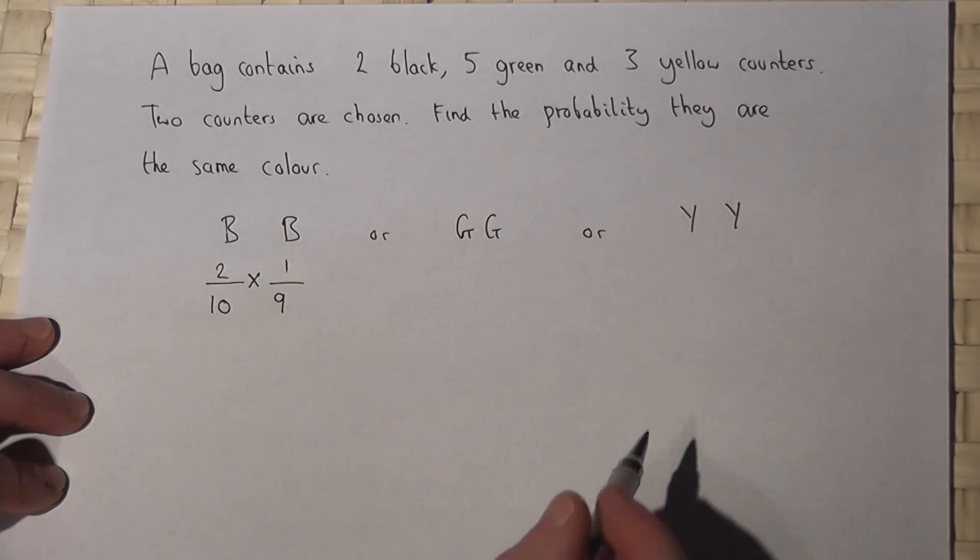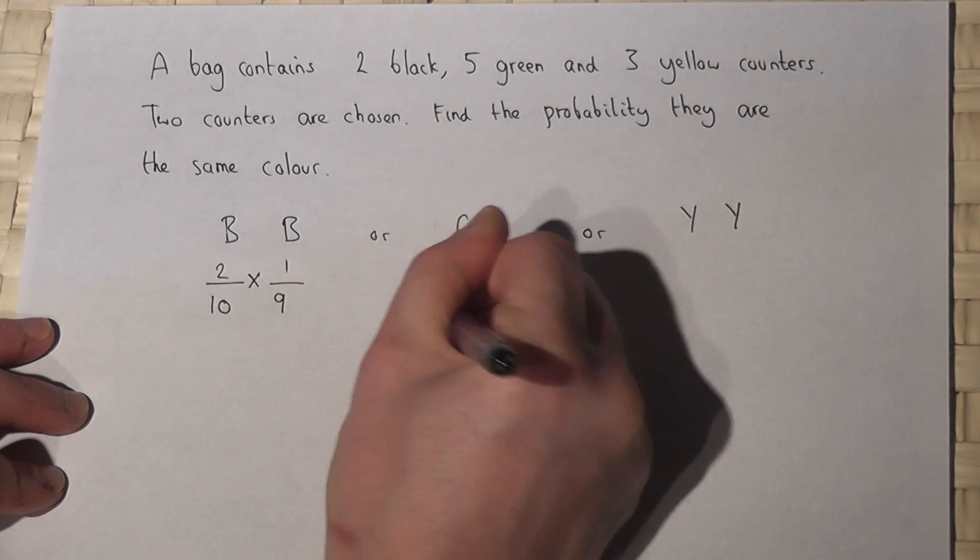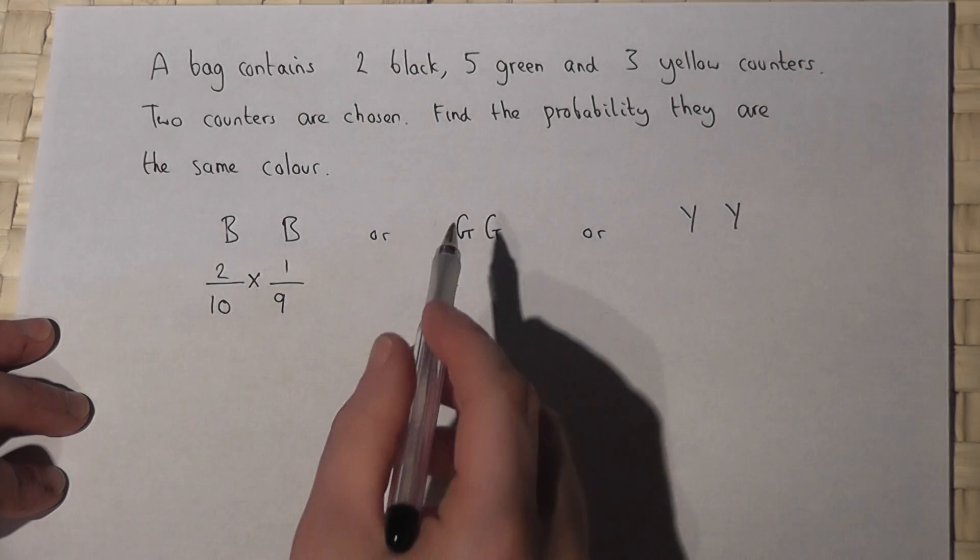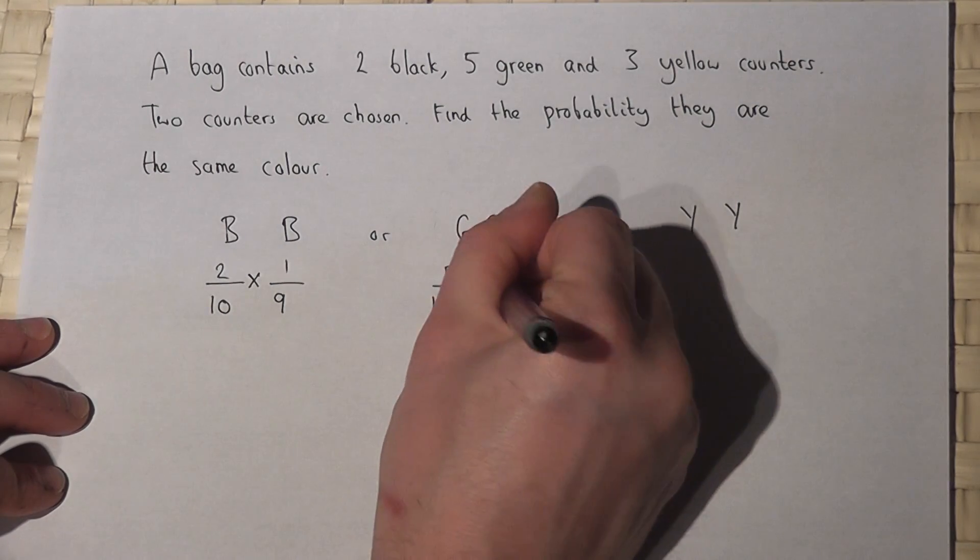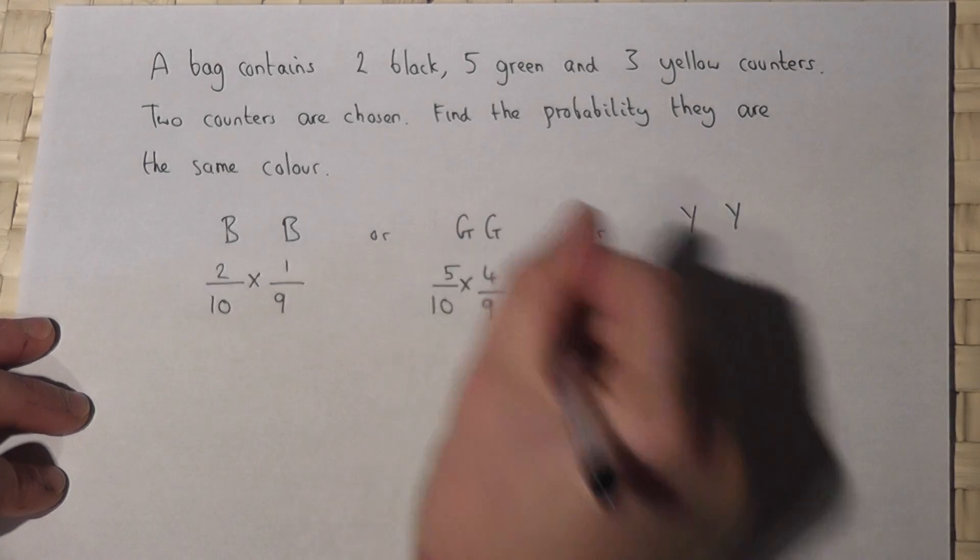Now green or green? When you first go in the chance of green is five out of ten. However with one green removed the chance that the next one's green will be four out of nine. Again there's one less in the bag. They are times together.